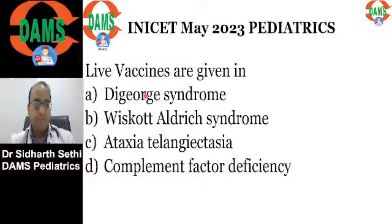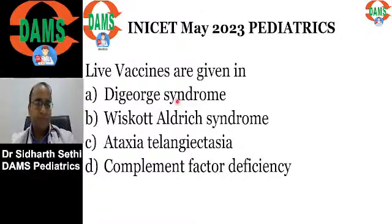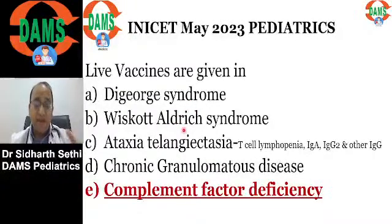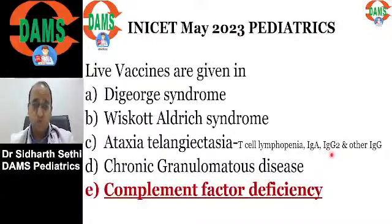There was a question on live vaccines — which disorder they can be given in and which not. The first three disorders — DiGeorge, Wiskott-Aldrich, and ataxia telangiectasia — have combined immunodeficiency. Both T cell and B cell immunodeficiency are seen. IgA is deficient, IgG is deficient, IgG2 is deficient. Live vaccines are contraindicated in these disorders.